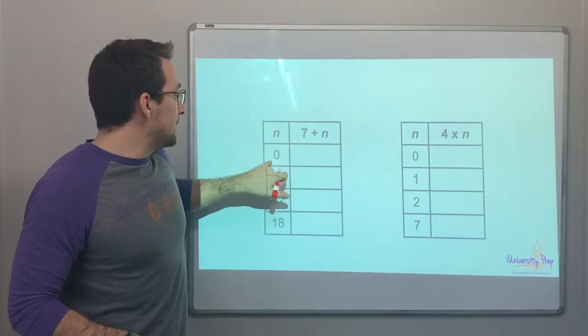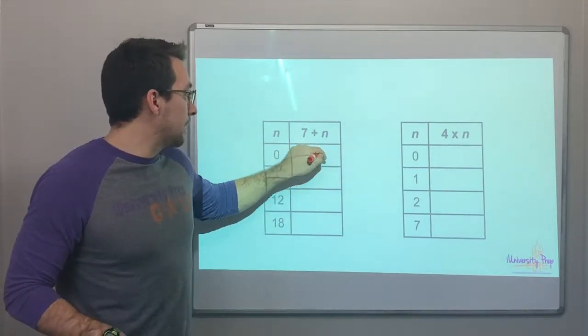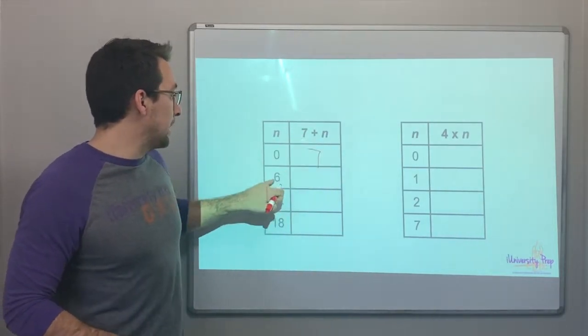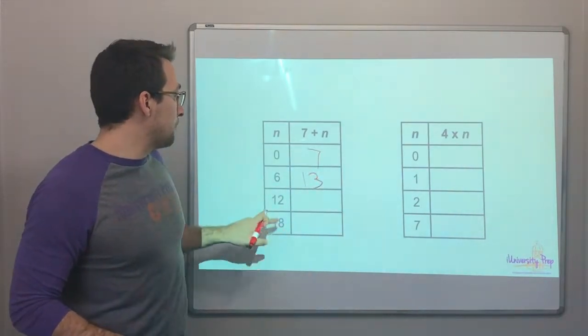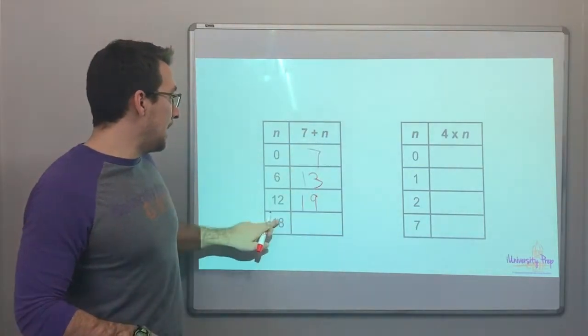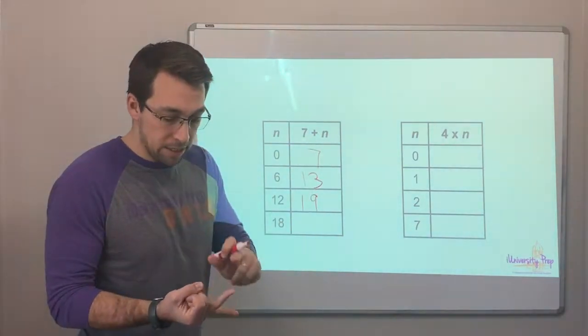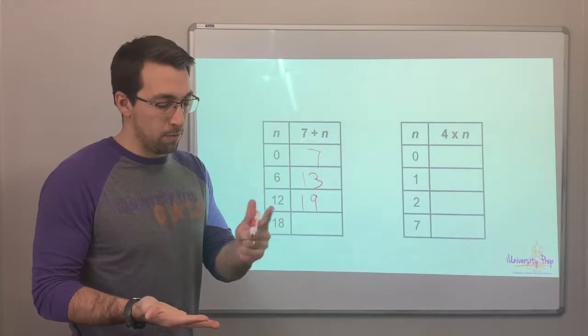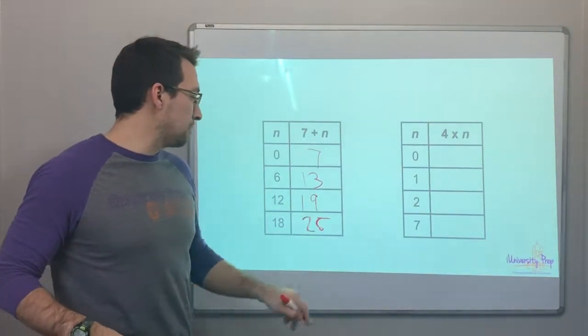So n is 0. 0 plus 7 is 7. 7 plus 6 is 13. 7 plus 12 is 19. 7 plus 18 is 25. Use your fingers.